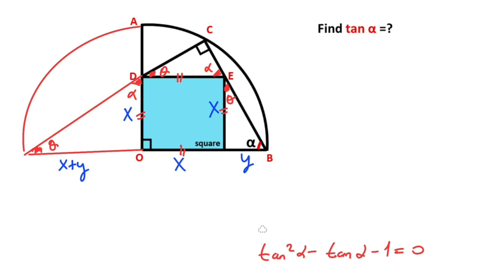And then we get the quadratic equation. If you convert this expression to a perfect square: tangent alpha minus one-half, all squared, minus one-fourth minus one equals zero.